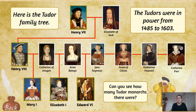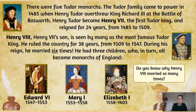Here is a family tree. We know the Tudors reigned from 1485 to 1603. Let's test your knowledge — pause the screen: how many Tudor monarchs can you see on this family tree? There were indeed five Tudor monarchs. The Tudor family came into power in 1485 when Henry Tudor became king, having overthrown King Richard III at the Battle of Bosworth. Henry Tudor was then known as Henry VII, the very first Tudor king, and he reigned for 24 years from 1485 to 1509.